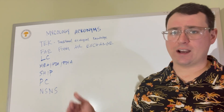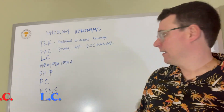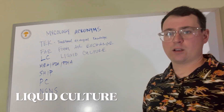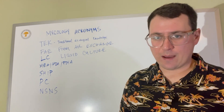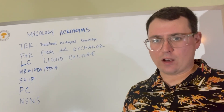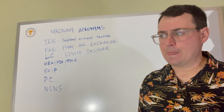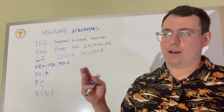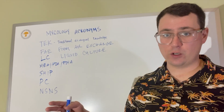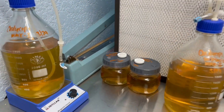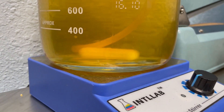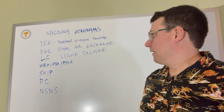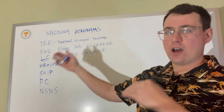Another acronym that comes up really often and can confuse people is the two-letter L-C, which stands for liquid culture. Liquid culture is relatively a new phenomenon in mycology — about 10 or 20 years ago it was introduced to the Shroomery. It's a very efficient way to expand your cultures. Liquid culture can be made from honey water, corn syrup, different sugar solutions like dextrose, or pre-mixes like TSB, tryptic soy broth. It's used to expand the mycelium, which is like the roots of the mushroom.